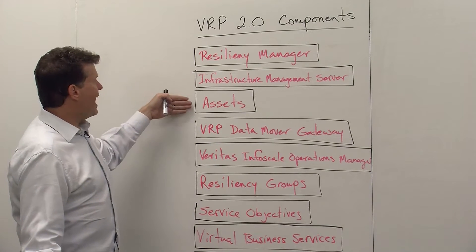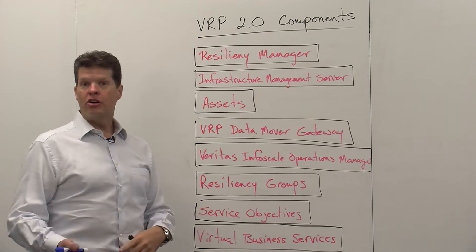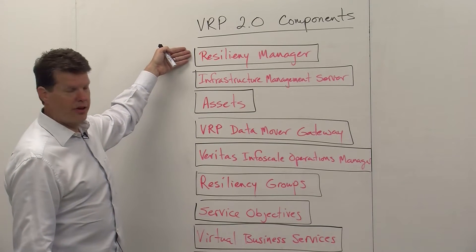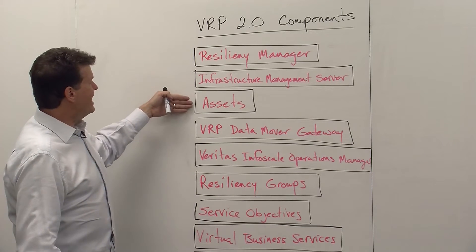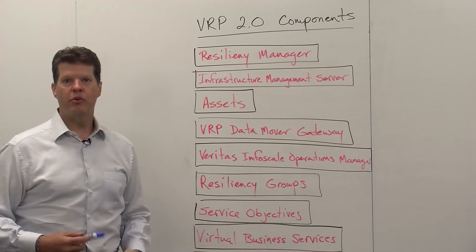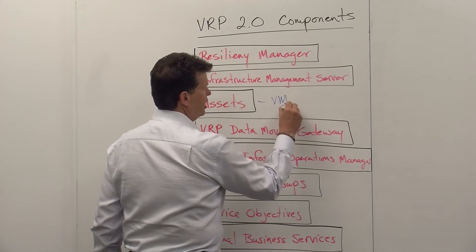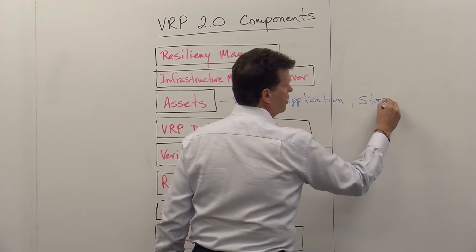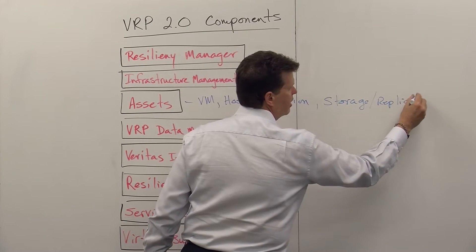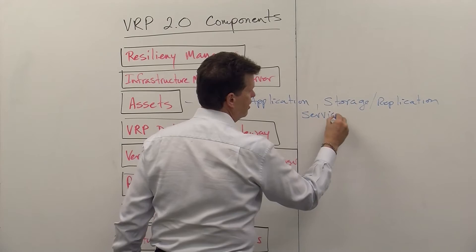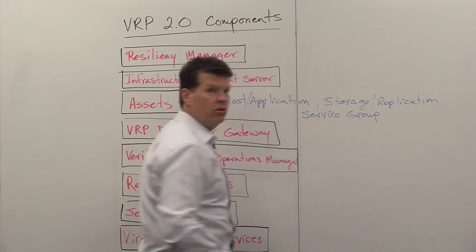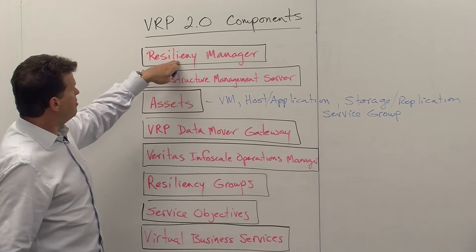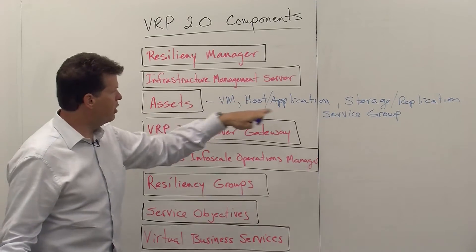The Infrastructure Management Server will have assets connected to it, and will initiate starts, stops, as part of a migration process, part of takeover processes, rehearsal processes — all by the direction of the Resiliency Manager. So the Infrastructure Management Server connects to our assets. The assets are the components that we are managing in this environment, and this includes virtual machines and hosts that are running applications.